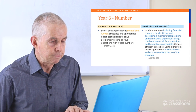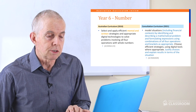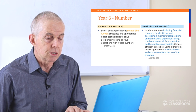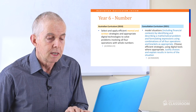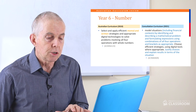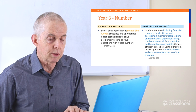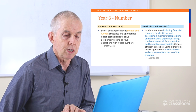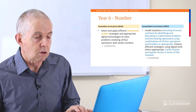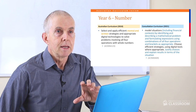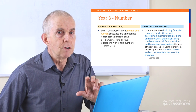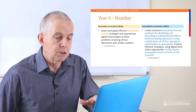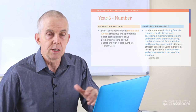Number nine: model situations, including financial contexts, by identifying and describing a mathematical problem and formulating expressions using combinations of all four operations and brackets as appropriate; choose efficient strategies using digital tools where appropriate; justify choices and explain results in terms of the situation. This is a great content descriptor with lots of detail — like identifying and describing a problem, formulating expressions using combinations of operations. This is well written.